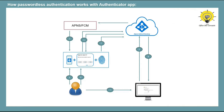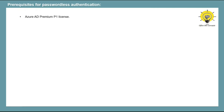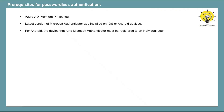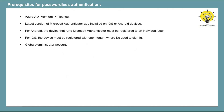Now let's talk about the prerequisites required to use passwordless authentication. You need an Azure Active Directory Premium P1 license. You need to install the latest version of Microsoft Authenticator app on your iOS or Android device. On Android, you need to register the user's account on that device in the Authenticator app. On iOS, the device should be registered with the tenant. You also require a global administrator account to enable passwordless authentication.